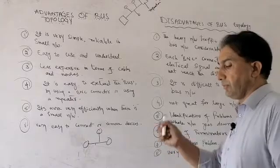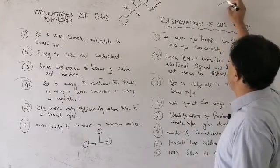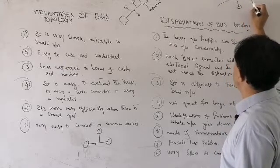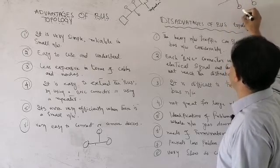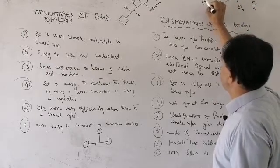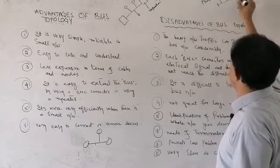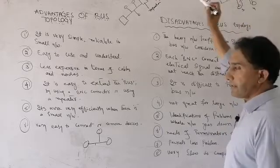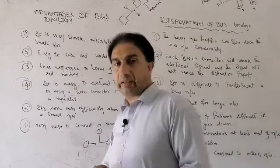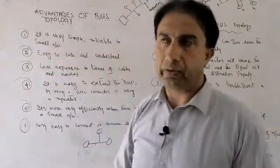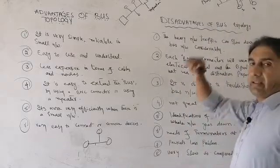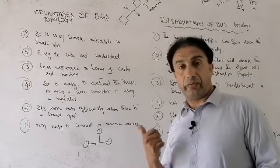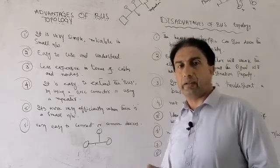For example, consider a main bus cable with PC1, PC2, PC3, and PC4 attached. If all these devices transmit their data simultaneously at the same time without checking the media, collision will take place. The network becomes jammed and very slow — this is a big issue with this topology.